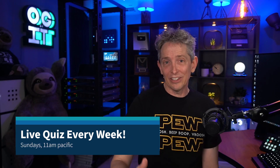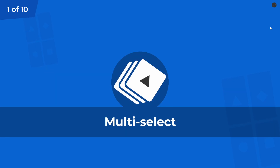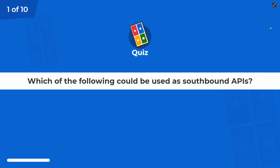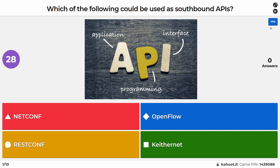It's the recordings of our quizzes that we do every Sunday at 11am Pacific. So if you want to join a quiz, set your calendar and I'll see you at 11 o'clock AM Pacific for the live quiz. Without further ado, here is question number one. It is multiple select, so choose at least two answers. Which of the following could be used as southbound APIs?